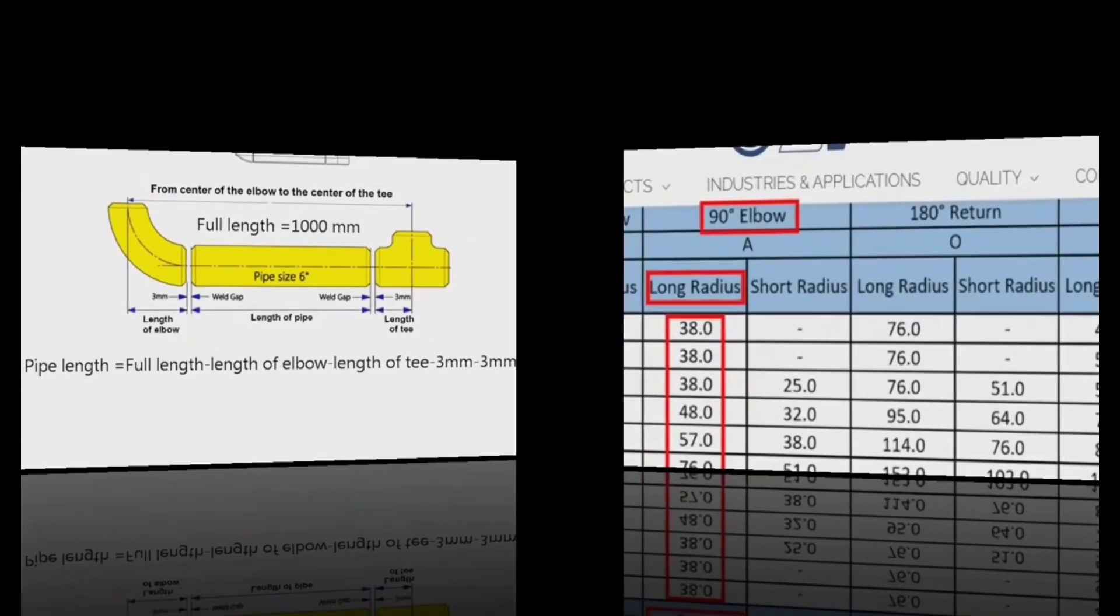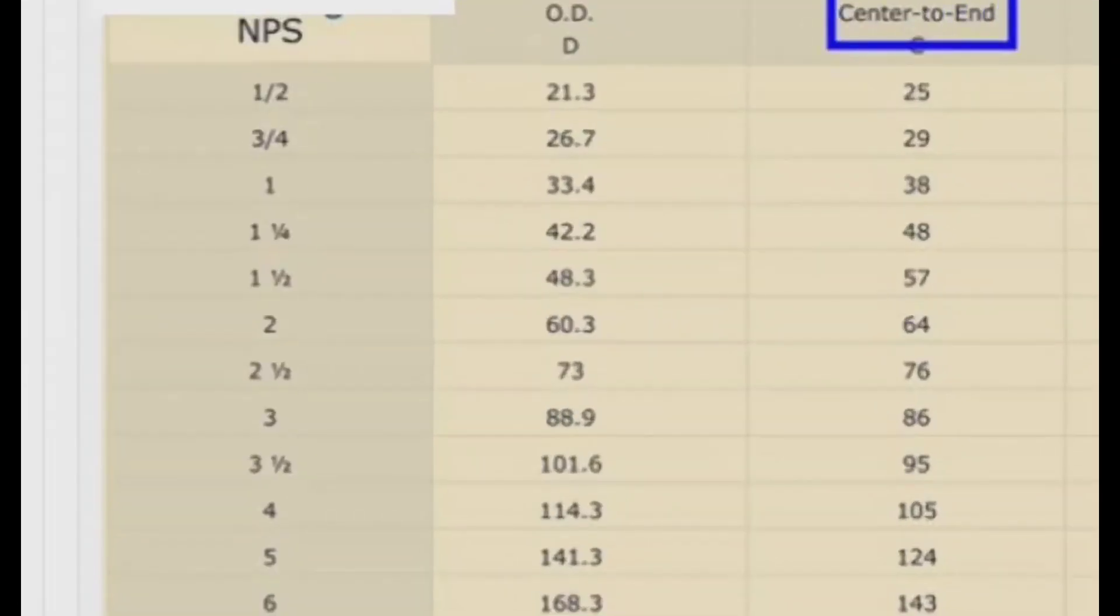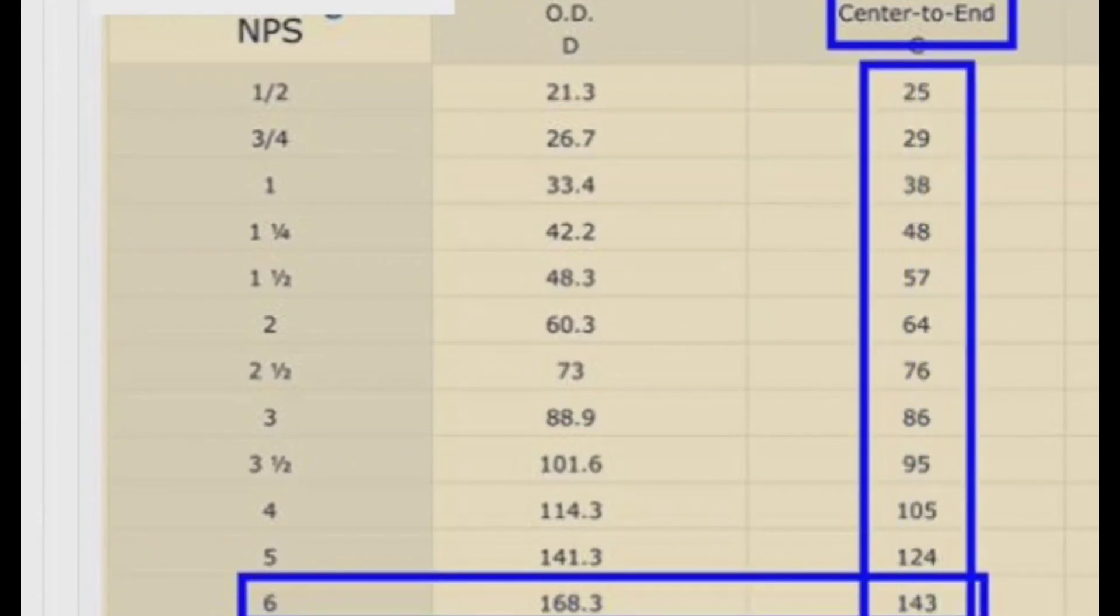With the same rule, we look at the standard table of sizes of tees and learn that the center to end of a 6-inch tee is 143mm.